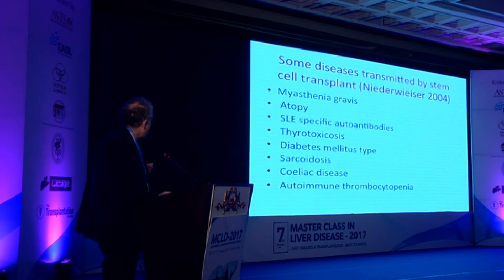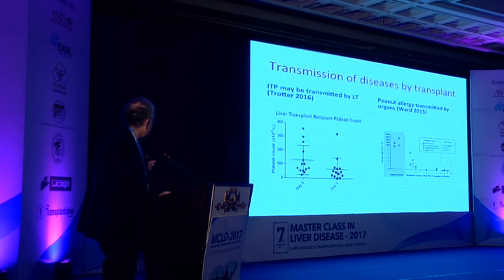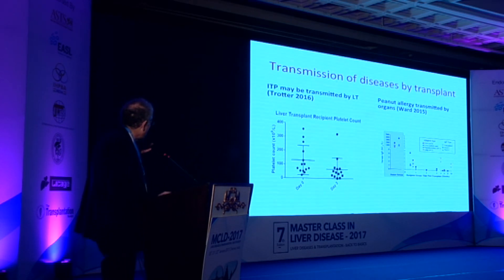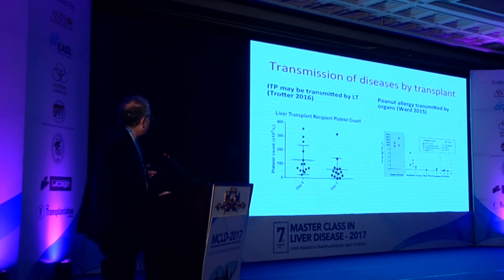A number of diseases can be transmitted by stem cell transplants. This emphasizes that we can't ignore lymphocytes as a contributory factor to the phenotype of autoimmune disease. Other conditions that liver transplantation can transmit include ITP — there was one fatal case of donor-derived ITP in the UK where the recipient developed no platelets and died. Peanut allergy is another that can persist for many months after transplant, again transmitted by transplantation.